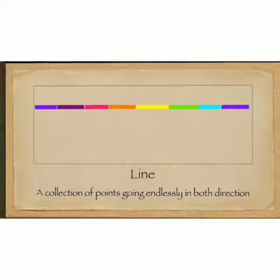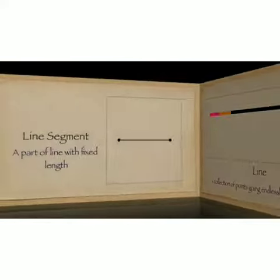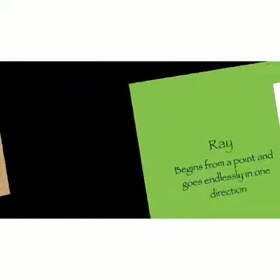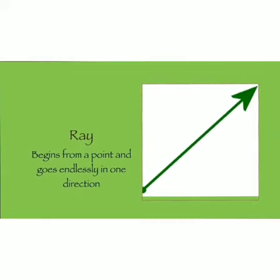A line extends endlessly in both directions. What is a line segment? A line segment is a part of a line with a fixed length. It has two end points. Next, we'll learn about what is a ray. A ray begins from one point called the starting point and goes endlessly in the other direction.